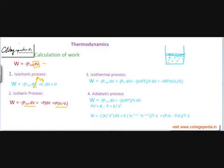The third process is the isothermal process. We again start with W = −∫P_ext dV. Here there is trouble: neither is dV zero as in isochoric, nor is pressure constant as in isobaric. So we cannot use those convenient shortcuts and must evaluate the integral directly — but that presents a serious problem.